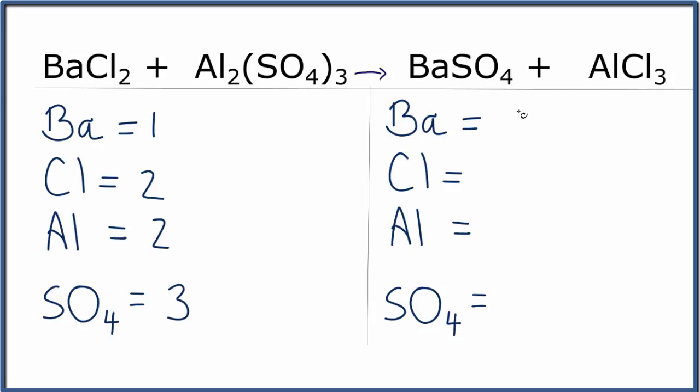Over on the products, 1 barium sulfate. I have 1 of those. Chlorines, 3, and then aluminum, 1. So I want to get everything to be equal here.